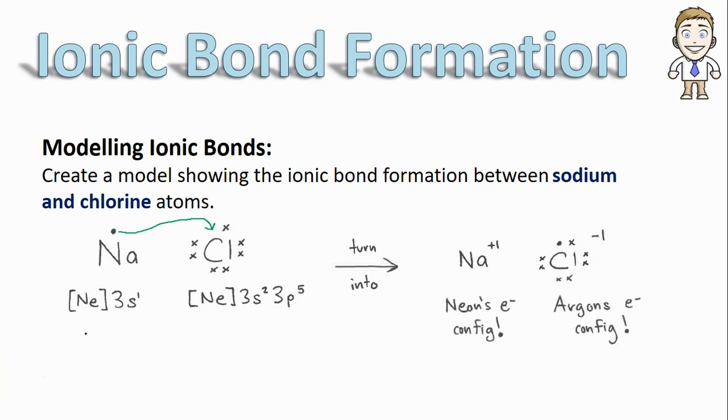Let's also just take a quick moment to remind ourselves that without that 3s1 sodium now has the configuration of neon making it stable. With 3p5 and that extra electron going to 3p6, chlorine has the electron configuration of argon making it stable which is again the entire point of the bonding process.